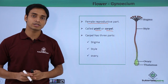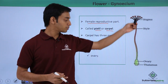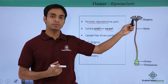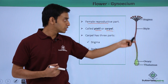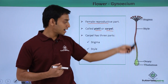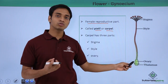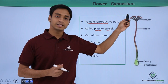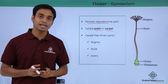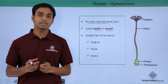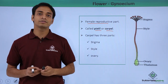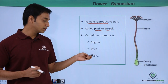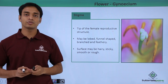A typical carpel or gynoecium is made up of three important parts. The first is the stigma — the outermost part of the gynoecium, as seen in the picture. This is followed by the style, which is the filamentous part connecting the stigma and the ovary. The innermost part is the ovary, which contains the female gametes known as the ovule.